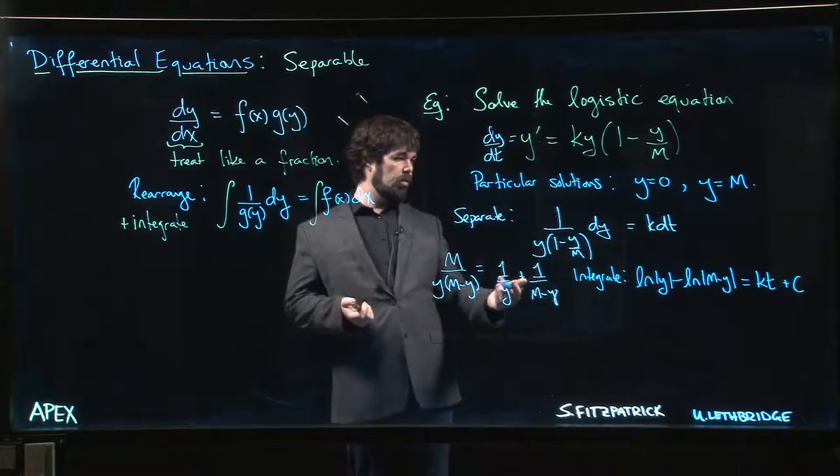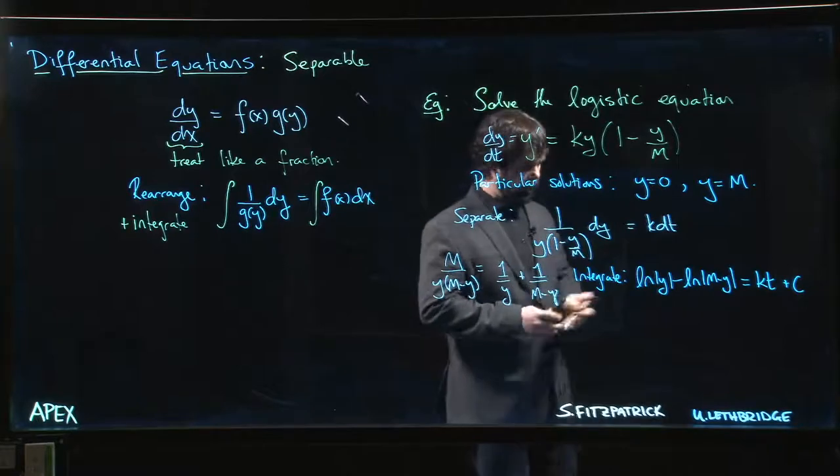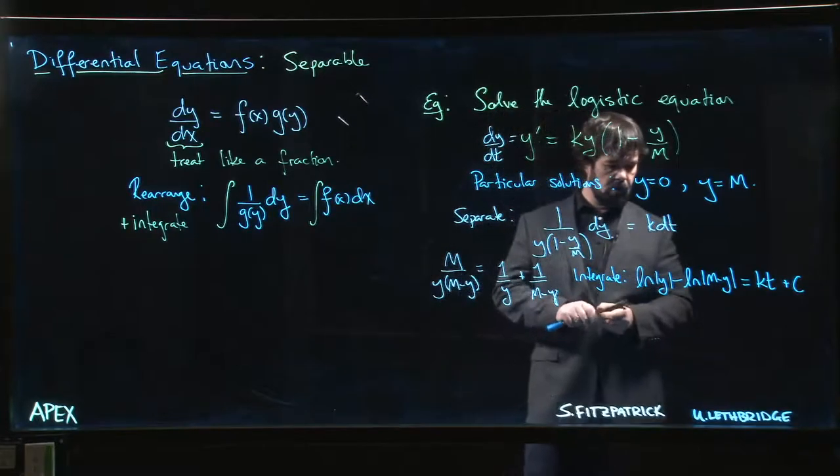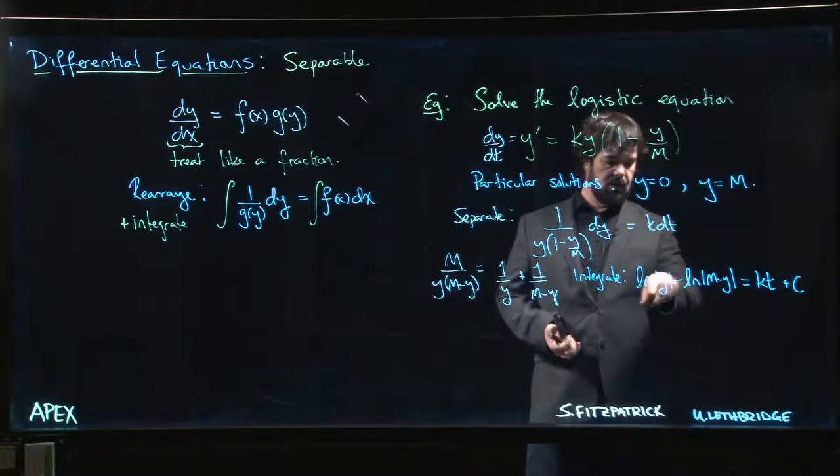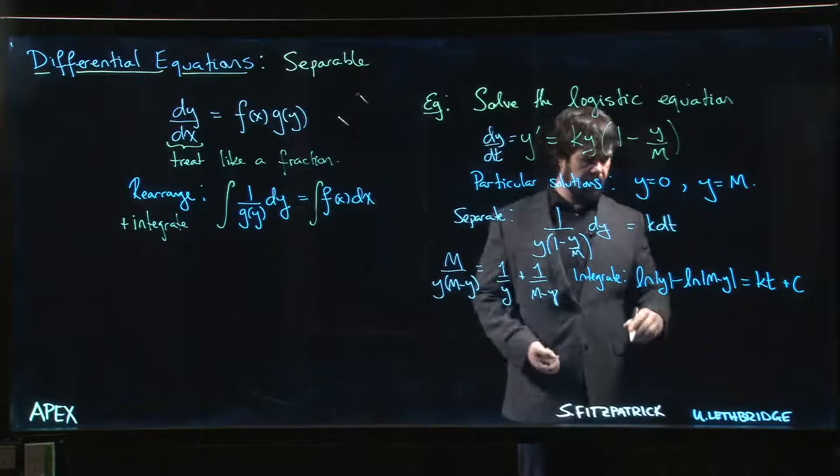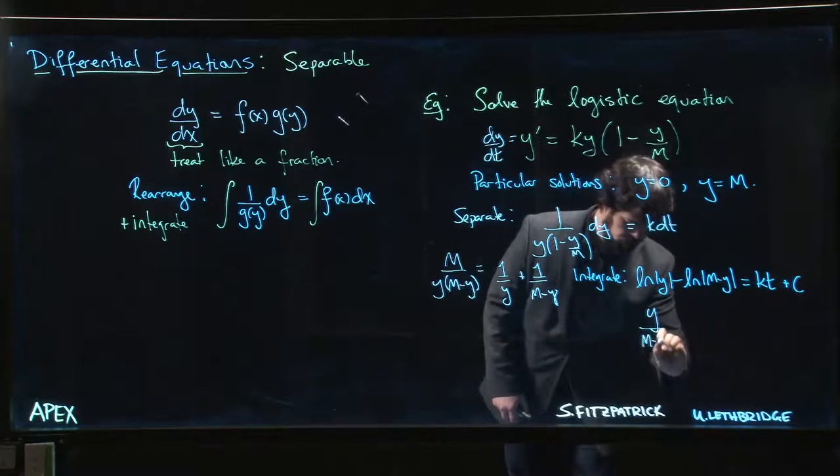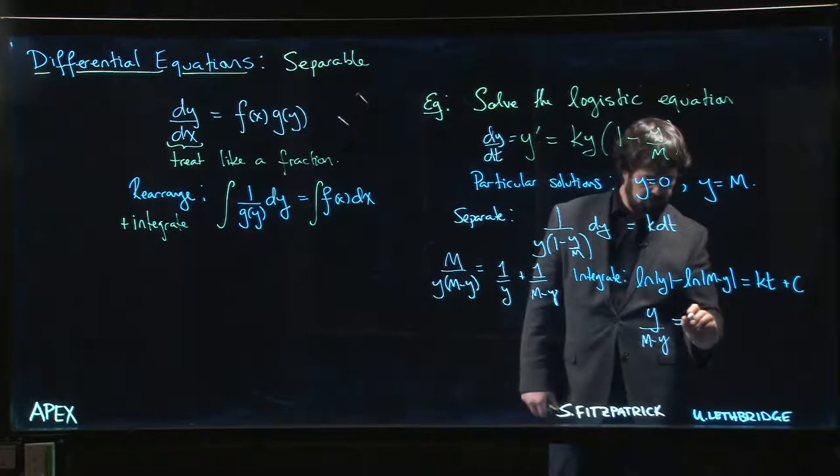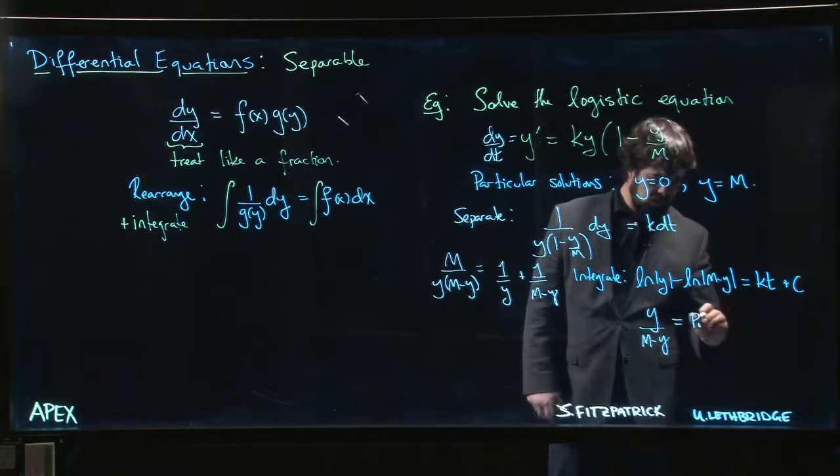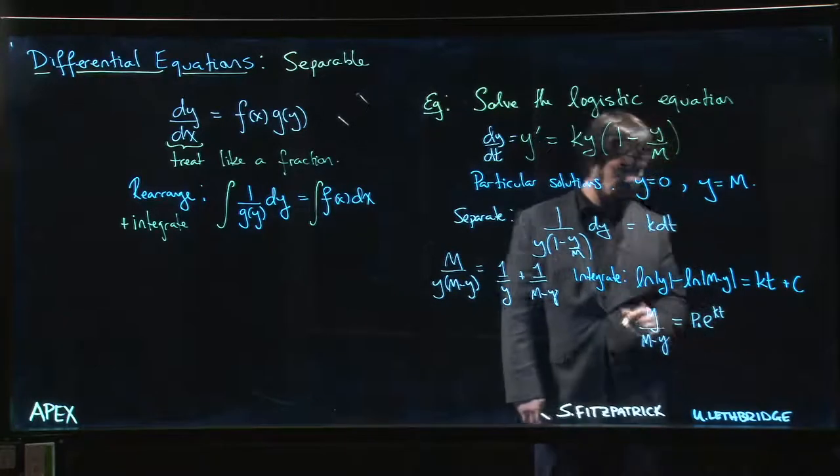And now we do the usual thing like we did with the exponential growth equations where we want to rewrite this, try to solve for y if we can. So you rewrite the equation, we can combine this into a single logarithm. Log property says log of a difference, if I have the difference of two logs, that's the same as doing log of the quotient. So we get y over (M - y). And if we take e of both sides, well then we're going to get something that looks maybe like this.